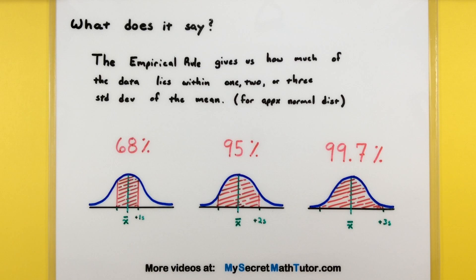It's just a wonderful rule to tell us how much of our data we can expect to be around our mean. Let's get into some examples and see how this might work.